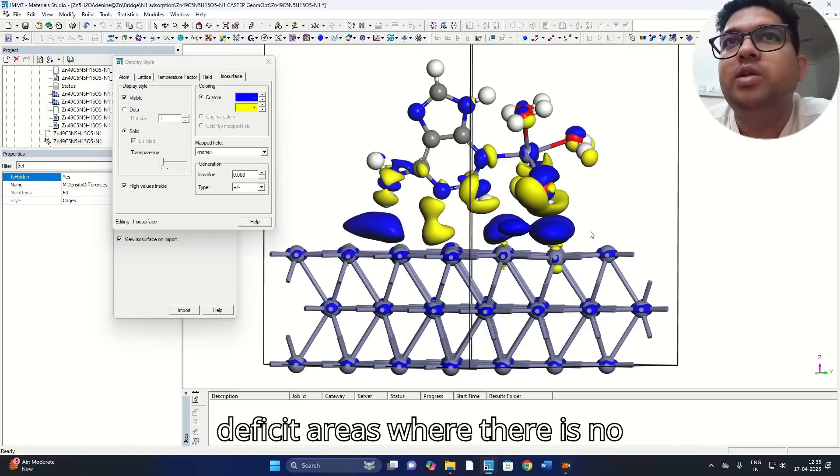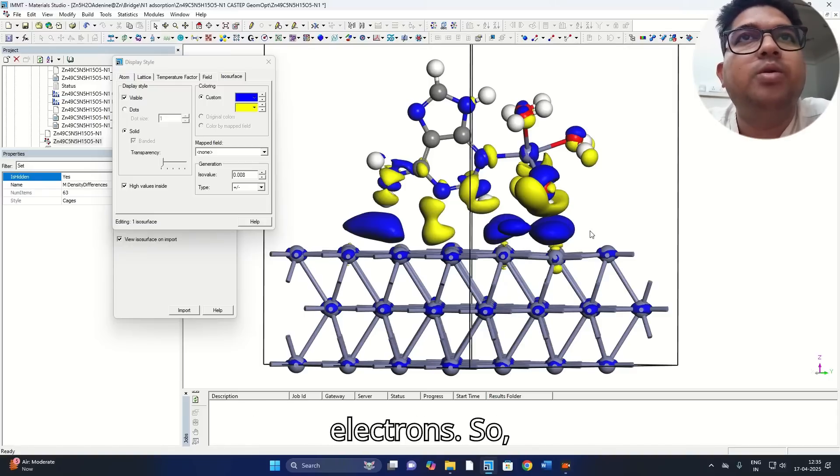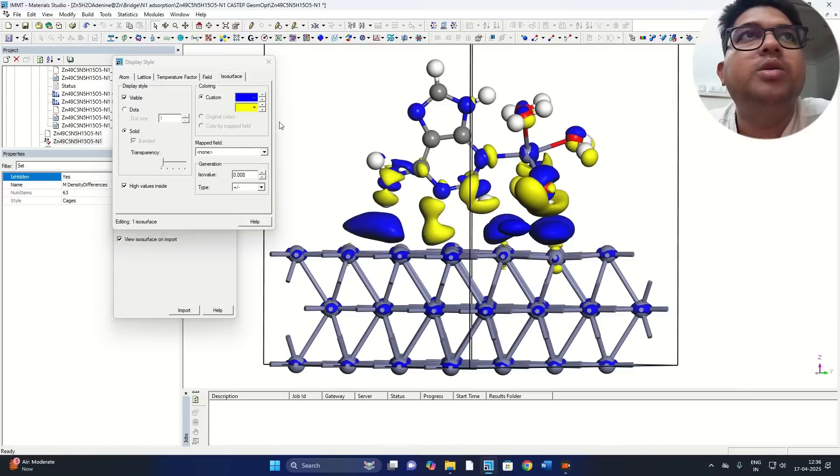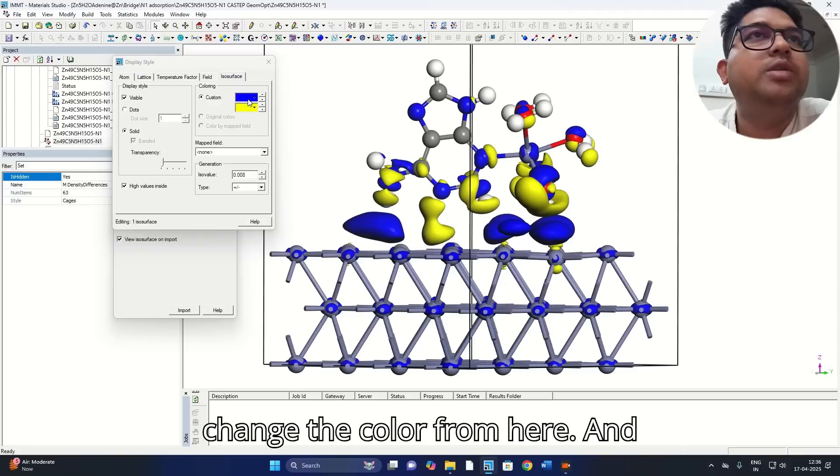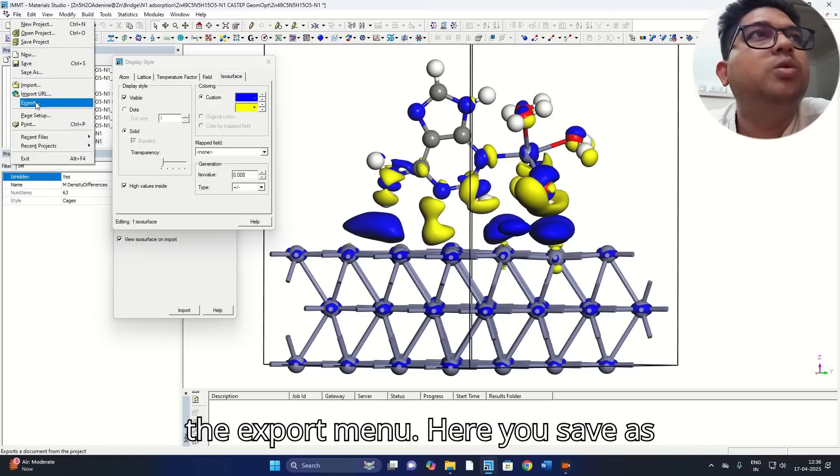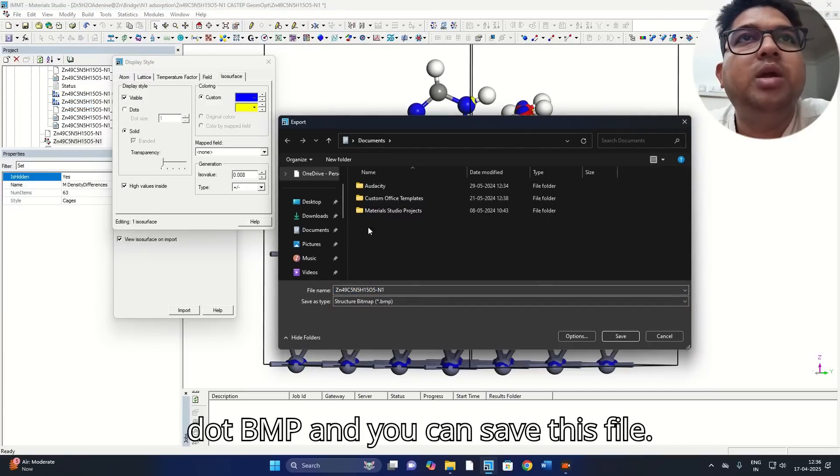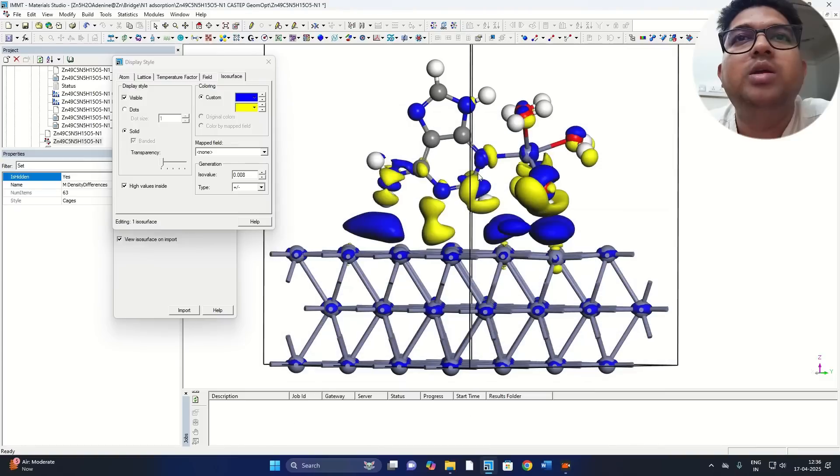This blue color is showing the electron rich centers while this yellow color is showing you the electron deficit areas where there is no electrons. So now once you have got this plot, if you want to change the color you can change the color from here. And if you want to save this picture, go to the export menu here, you save as .bmp and you can save this file.